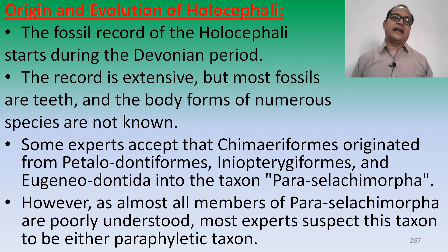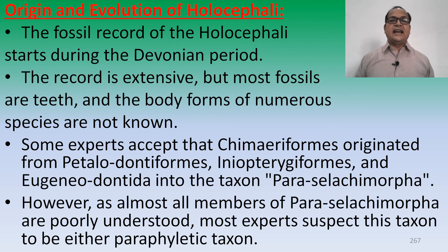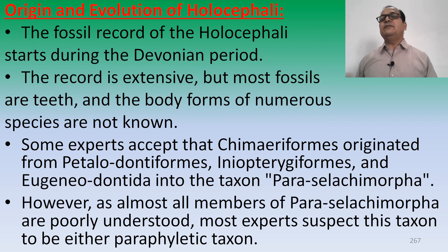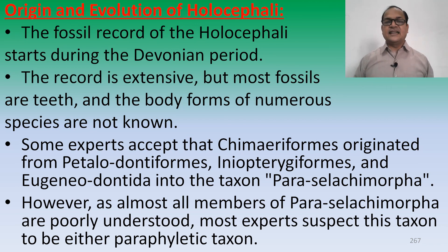Regarding the origin and evolution of Holocephali: the fossil record starts during the Devonian period. The record is extensive but most fossils are teeth, and the body forms of numerous species are not known. Some experts accept that Chimeriformes originated from Palaeoselachii, Iniopterygia, or Eugeneodontia within the taxon Paraselachii. However, as almost all members of Paraselachii are poorly understood, most experts suspect this taxon to be a paraphyletic taxon.